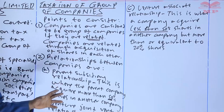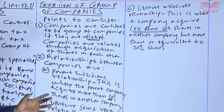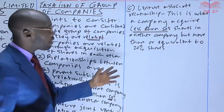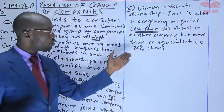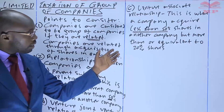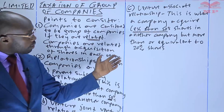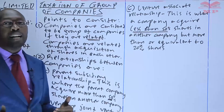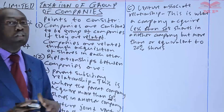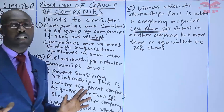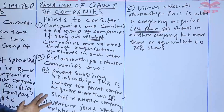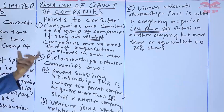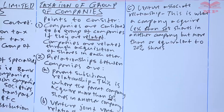We have the fourth one, which is called mere investment. If a company acquires less than 20% shares, it is called a mere investment. We don't even have a consideration for it — we don't even have a name for it. This covers the relationships that can exist between companies.